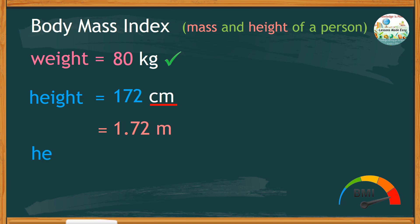Then, take the square of the heights by multiplying this number by itself. That would be 1.72 times 1.72. And we get a product of 2.9584 square meters. Now that we are ready to calculate the BMI,